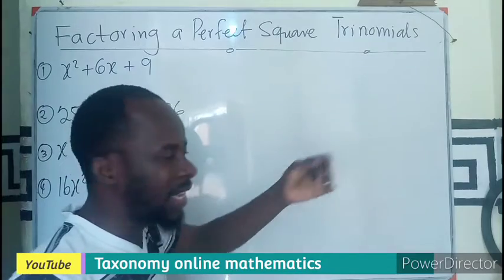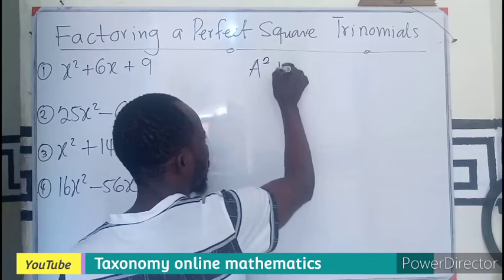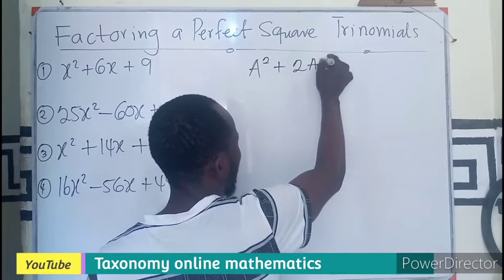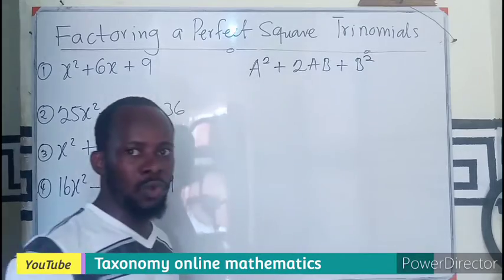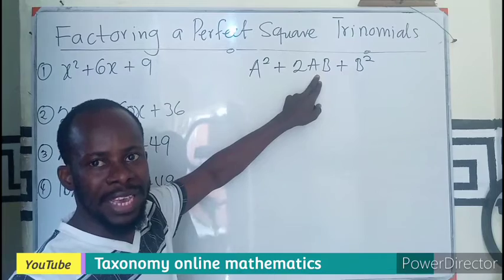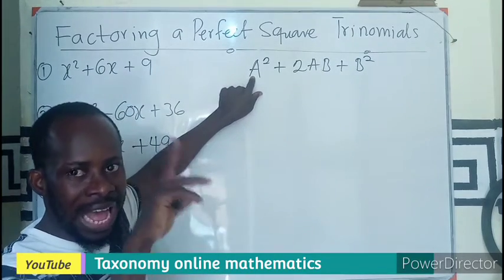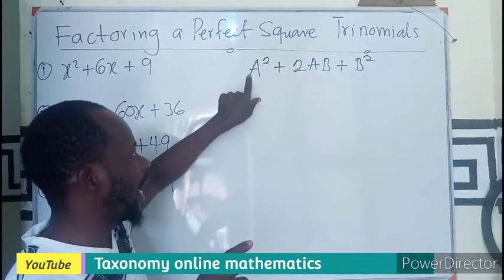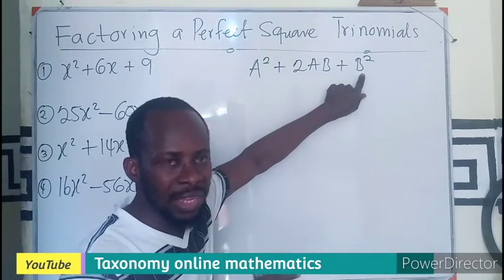...the first term square plus twice the first and second term plus the second term squared. If you can be able to spot out to see that the middle term is made up of twice the product of the numbers that are squared—the A and the B, not the answer—the number that is squared, which is the A and the B, not the answer. So if here is four squared, we are not going to have 16 to be part of the middle term, only the four.